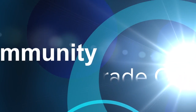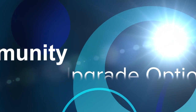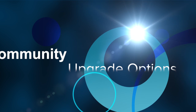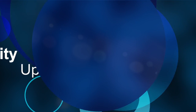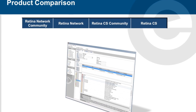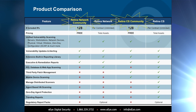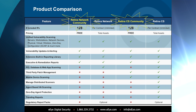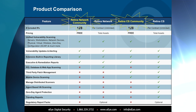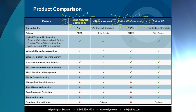Welcome to a brief video discussing your upgrade options for the Retina Community Edition. The Retina family of solutions is available in four different versions. Retina Community versions are free up to 128 IP addresses and contain advanced features for third-party patch management, as well as the ability to scan mobile devices.